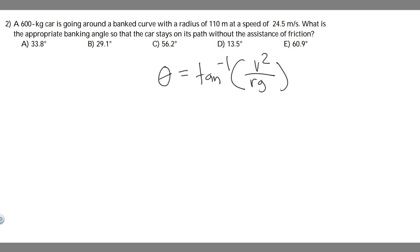In order to solve this problem, there's a common known formula if you're trying to solve for the banking angle without the assistance of friction. This is just a formula you need to know, which is theta, or your banking angle, is equal to the arctangent of the velocity squared divided by the radius times the gravity.